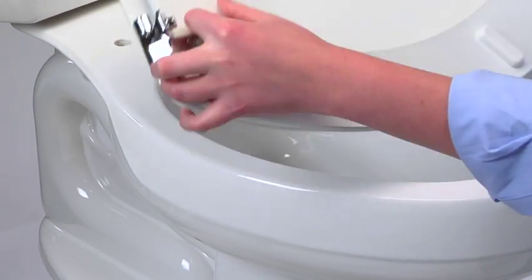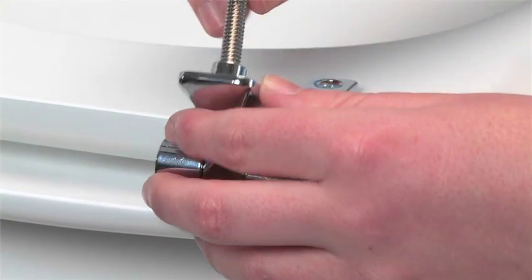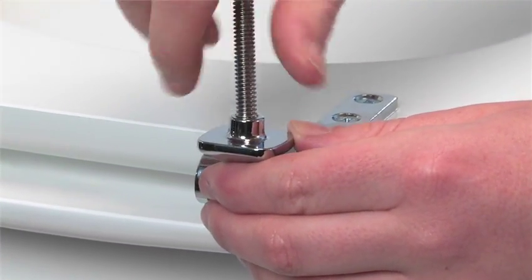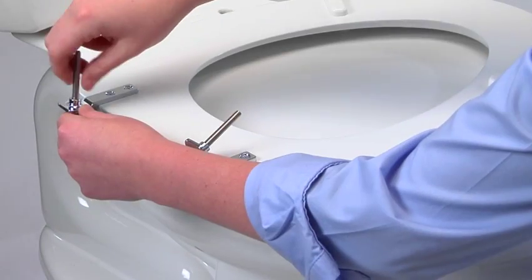Start the installation process by turning the seat over and threading the bolts into the holes at the bottom of the hinges. Keep turning until the bolts are thoroughly hand tightened and will turn no further.